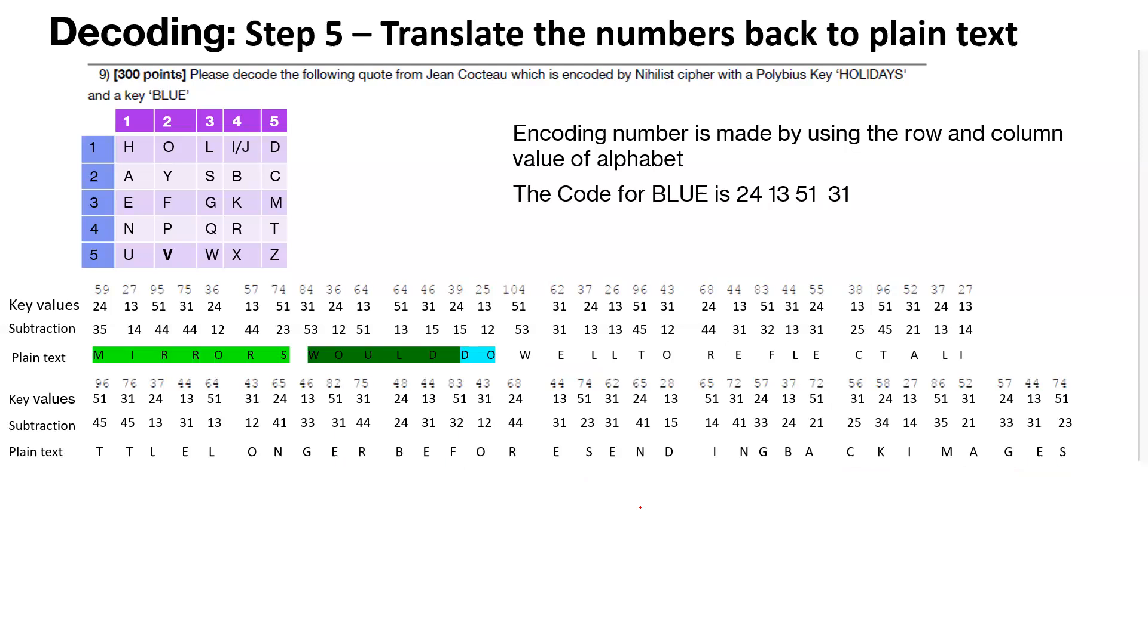And if you see, if we color it, this is how it would appear. Mirrors would do well to reflect a little longer before sending back the images. So that is our decoded text.